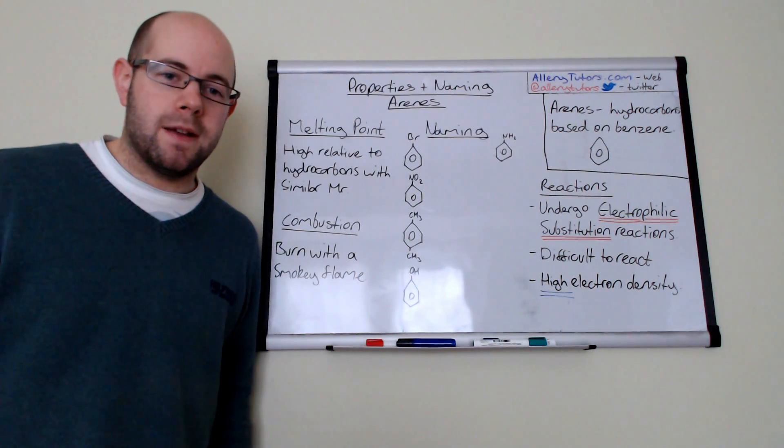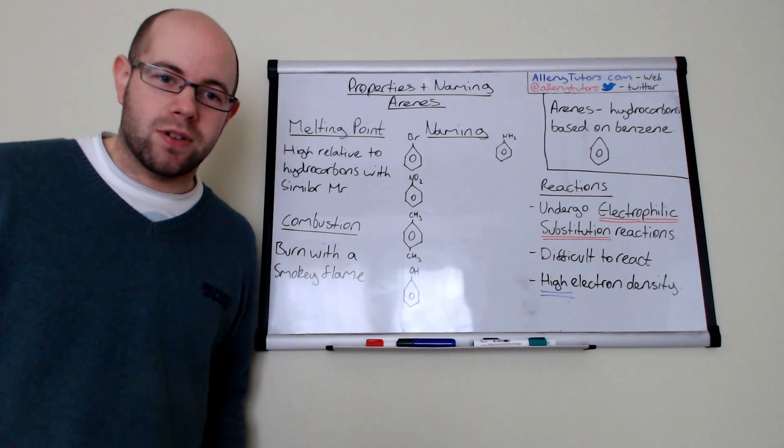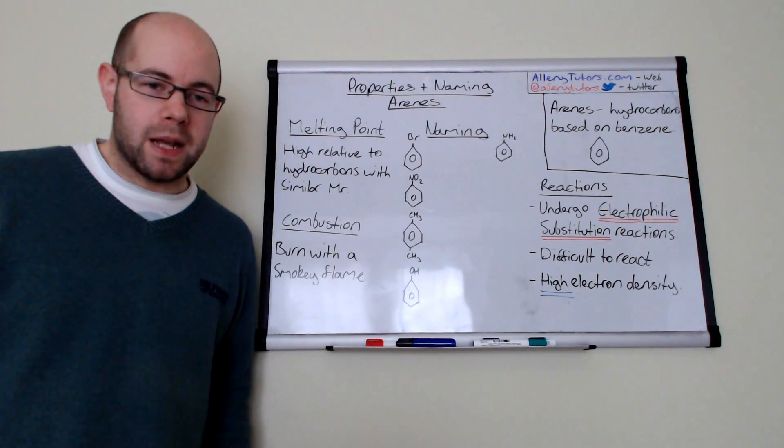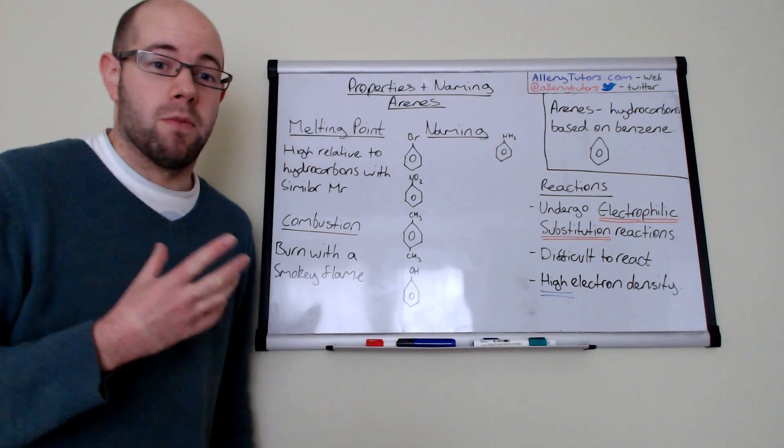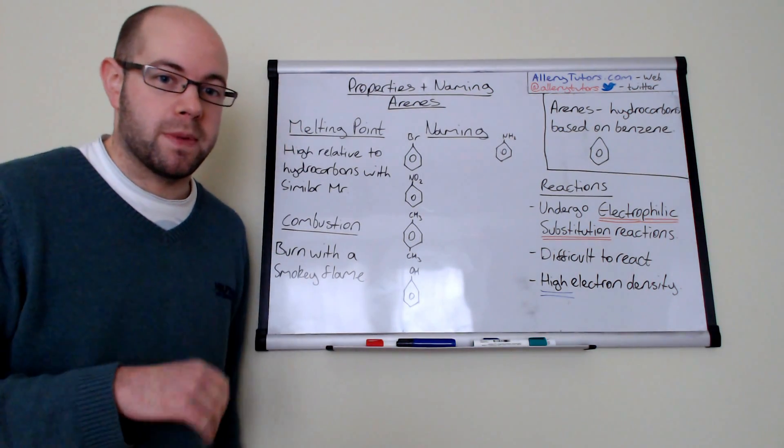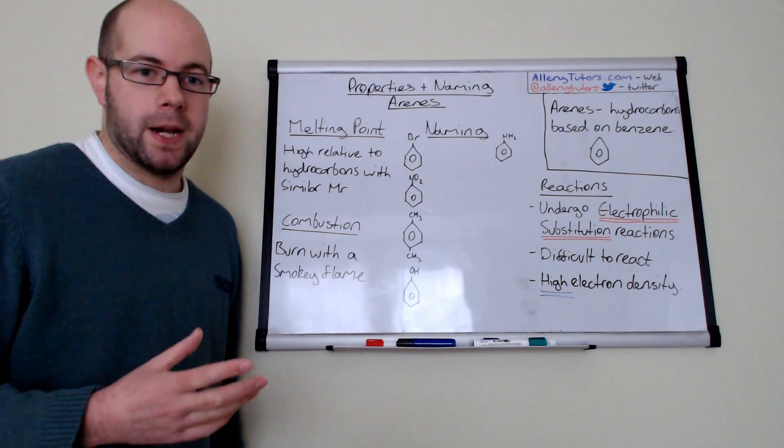Basically, an arene is a name given to a hydrocarbon that is based on a benzene compound. I've written that there to remind you. You'll see that word quite a bit, especially in A-level chemistry.